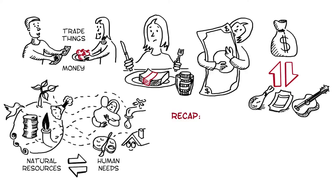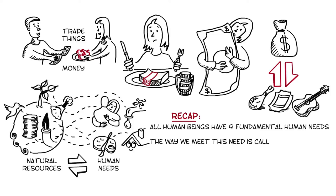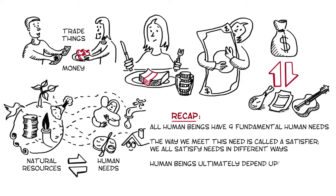Before moving on, let's take a recap of what we've learned so far. All human beings have nine fundamental human needs. The way we meet these needs is called a satisfier. We all satisfy needs in different ways. And human beings ultimately depend upon the natural environment to meet their needs.